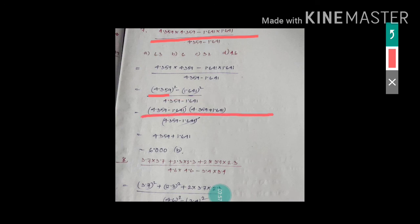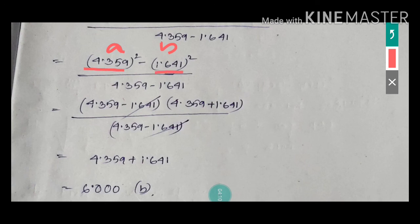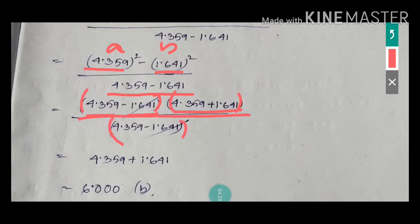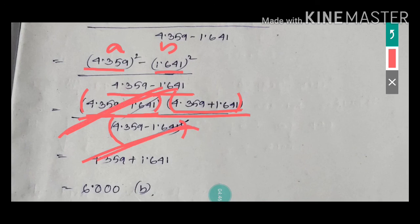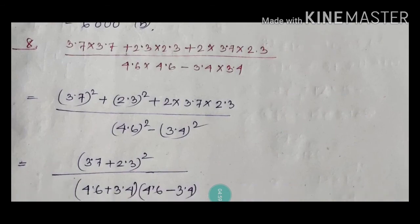So a minus b is 4.359 minus 1.641, and a plus b is 4.359 plus 1.641. Looking at the denominator, 4.359 minus 1.641 is already given there — no need to do the subtraction separately because the numerator term and denominator term are already the same. Simply cancel them. The remaining term is 4.359 plus 1.641, and doing the addition gives the answer 6.